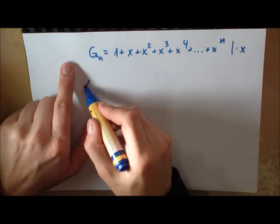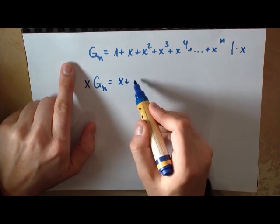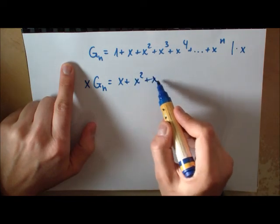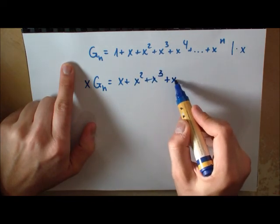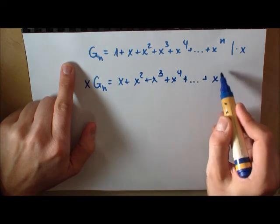What we are doing is we are multiplying this equation by X and you will get this. So 1 times X will give you X squared plus X cubed plus X to the 4.